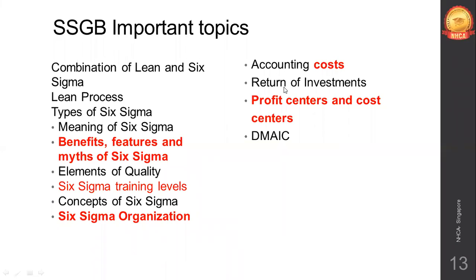Cover the Six Sigma organization — from leadership to team members, coaches, sponsors, etc. Know their functions and who all are involved, and be very thorough on individual functions. Also cover accounting costs: different types of cost, opportunity cost, variable cost, fixed cost. Some examples will be given and you'll have to identify which kind of cost it is — examples from the textbook will be used. Also cover Return on Investment and its formula.